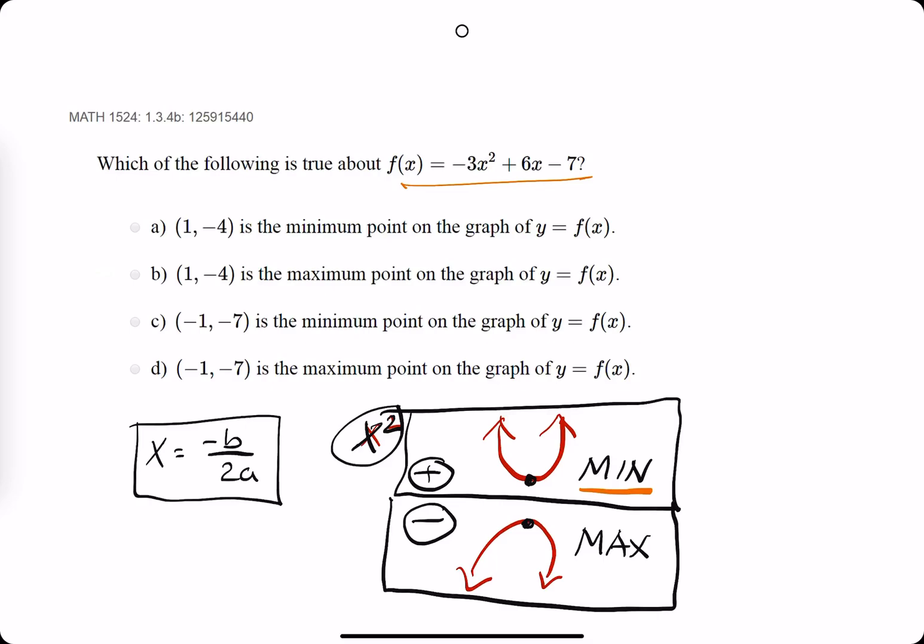But if we have an opening down parabola, we will have a maximum at the vertex. So regardless of whether or not it's a max or a min, the vertex is where it will occur.